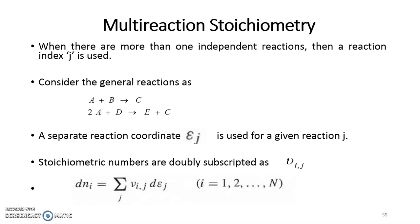Epsilon will help you find out conversion, which is always less than 100%. Conversion is defined as the number of moles reacted divided by the initial moles. So epsilon always tells you what is the number of moles which have reacted. This is how you can find out mole fractions for any given single or multi-reaction system, and this can then be related with other properties to find the extent of reaction, which we will see in coming videos. Thank you.